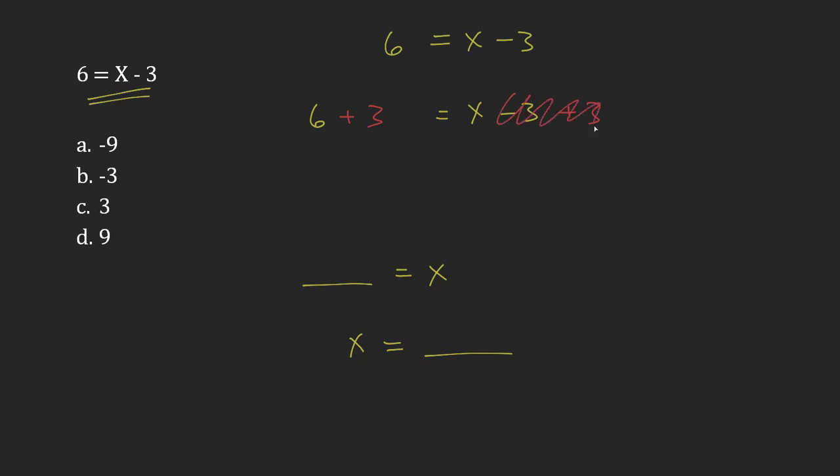On the one side over here, negative 3 and positive 3, that will combine to give me 0. So that just leaves x by itself.